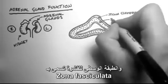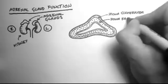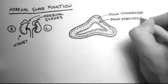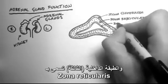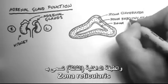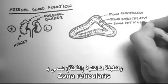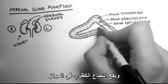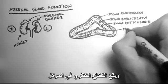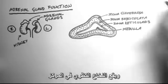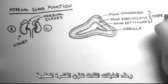The next layer is the zona fasciculata. The third layer is the zona reticularis. And then the adrenal medulla is situated in the centre. These three layers make up the adrenal cortex.